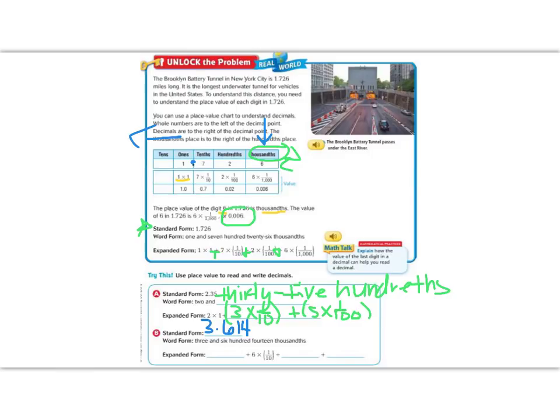Now, let's go ahead and do expanded form. We have a three first, the three is in the ones place. So, it's going to be three times one. Plus, they did the six for us, six times one tenth, because it's in the tenths place. The next number that we have is a one, and it's going to be one times, it's in the hundredths place. So, one one hundredth. And lastly, we have a four. Four times, it's in the thousandths place. So, one one thousandths.